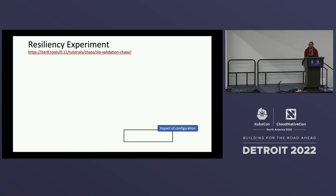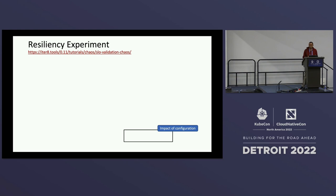Let's move on to our next experiment — this is really the main experiment I wanted to highlight: a resiliency experiment. Here is one practical use case: the same application, if the deployment configuration is different, can have a very big impact on resiliency. So this is an experiment to check a couple of different deployment configurations and decide which one is more resilient.